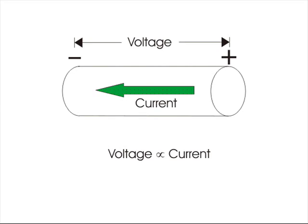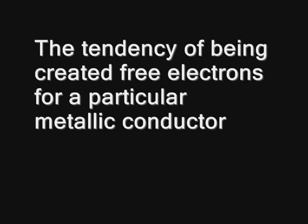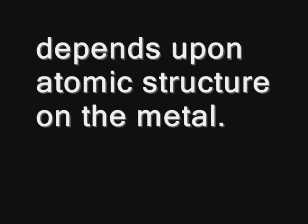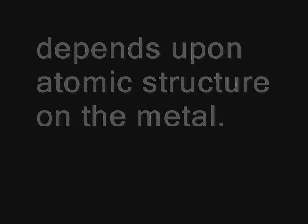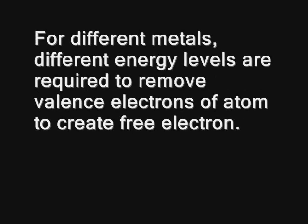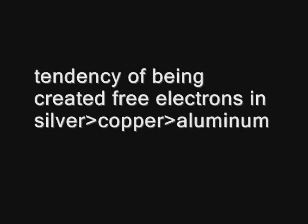Here, we should remember some basic things. The tendency of creating free electrons for a particular metallic conductor depends upon atomic structure of the metal. For different metals, different energy levels are required to remove valence electrons of atoms to create free electrons. That is why, tendency of creating free electrons in silver is much higher than copper, and that of copper is higher than aluminum.